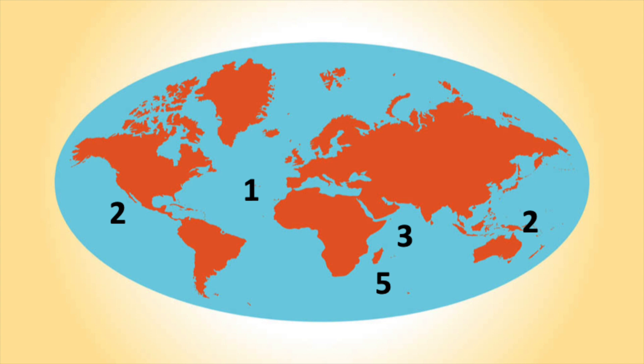And number two, you'll notice, is on both sides of the map. And that's because if we folded the map together, those parts would form the circle, the seam of the circle.